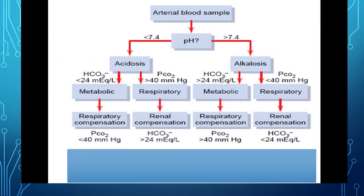According to mechanism, gaseous (respiratory) and non-gaseous (metabolic) types of acidosis and alkalosis are distinguished. Accumulation of carbon dioxide in the blood — for example during hypoventilation — leads to respiratory acidosis. Accelerated elimination of carbon dioxide — for example during hyperventilation — may lead to respiratory alkalosis.